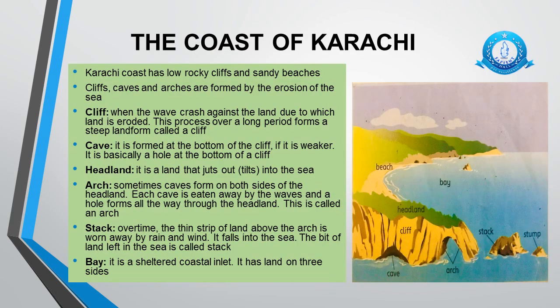The coast of Karachi — the word coast means seashore. To learn about different landforms, please look at this picture carefully. Karachi coast has low rocky cliffs and sandy beaches. Cliffs, caves and arches are formed by the erosion of the sea. When waves crash against the land and erode it, this process over a long period forms a steep landform called a cliff. A cave is formed at the bottom of the cliff if it is weaker — it is basically a hole at the bottom of a cliff. A headland is land that juts out, meaning tilts into the sea.